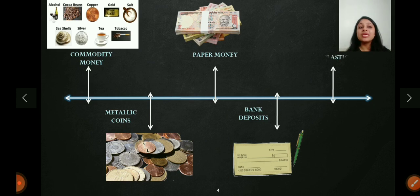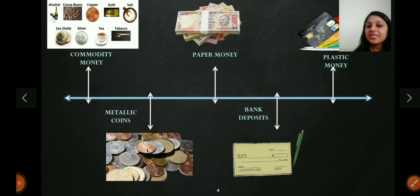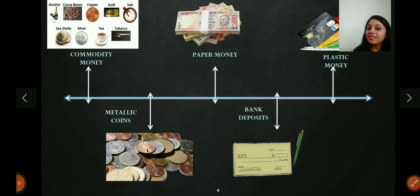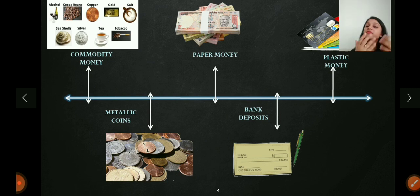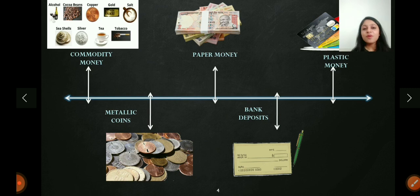The latest form of money is plastic money — the debit cards and credit cards that we have. These have now become the paperless form of money. They can be used as a medium of exchange and also as a measure of value. So these are the various forms of money, placed in a way that helps you understand the evolution of money.